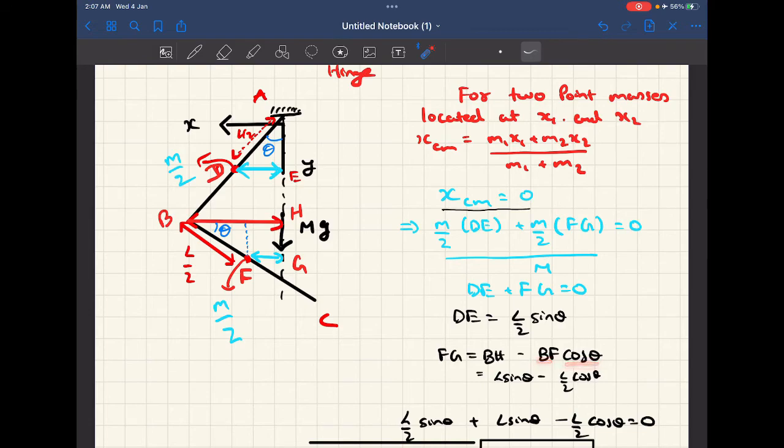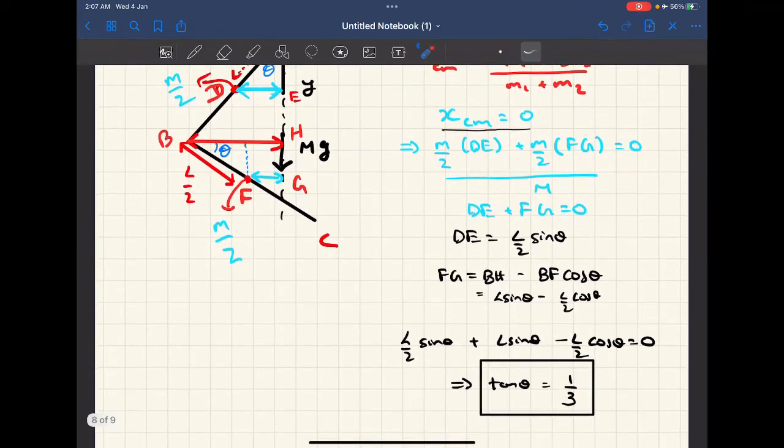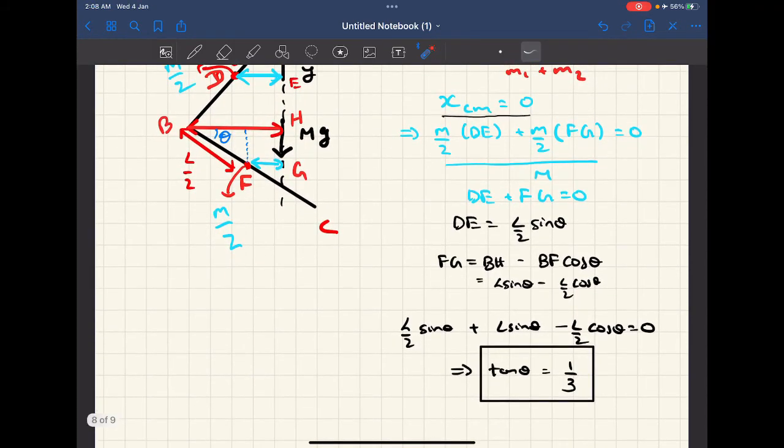Now BH I have written it specifically here for you guys to understand. BH is gonna be L sine theta and BF cos theta is gonna be L by 2 cos theta. Now once you have done that, just plug in the values to get the answer of tan theta as 1 by 3.